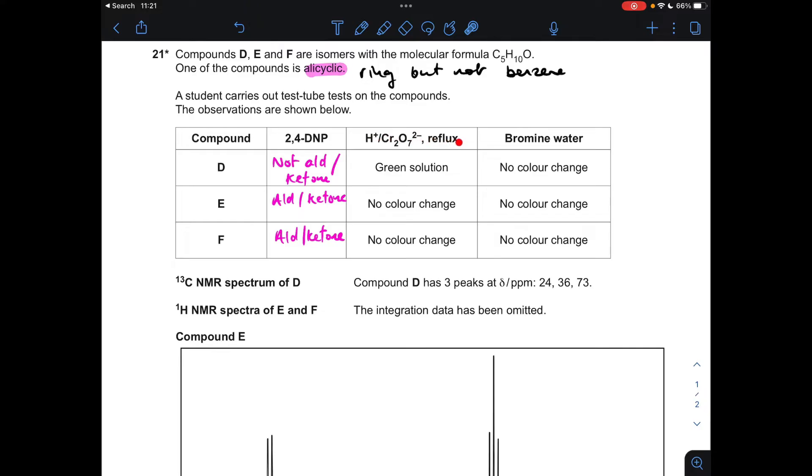So moving on to the results of this second test, the acidified dichromate six ions under reflux. Remember, this is an oxidizing agent, and it's orange in color. So it's gone green here, so there's been a change, there's been a reaction. So what sort of things can be oxidized? Well, it could be a primary alcohol or a secondary alcohol. It can't be an aldehyde, even though they can be oxidized, because we've ruled out aldehyde in the first test. So moving on to E and F, they've got the same result. So there's no color change, so they haven't been oxidized. So like I've just said, you can oxidize an aldehyde, so it hasn't been oxidized. So these must both be ketones.